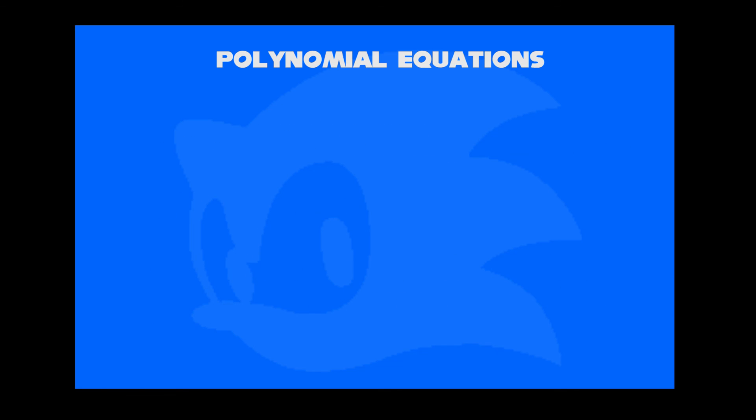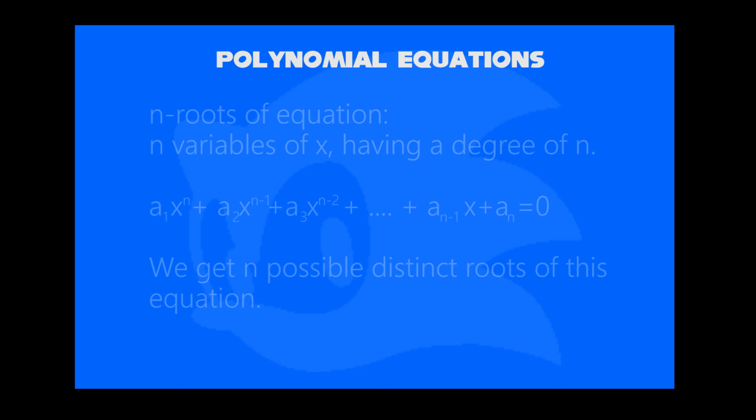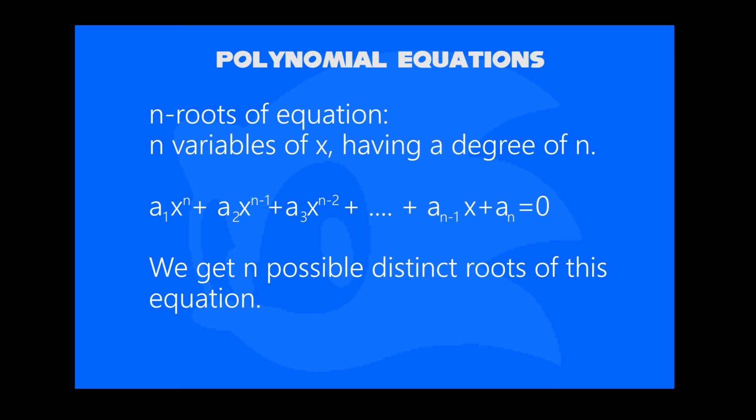In case I only ask about the n number of roots, where x has a degree of n, we write a1x to the n exponent plus a2x to the n minus 1 exponent plus a3x to the n minus 2 exponent and so on, till a of n minus 1 times x plus an equal to 0. You will get n possible distinct roots.